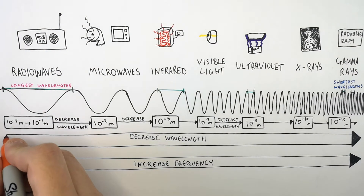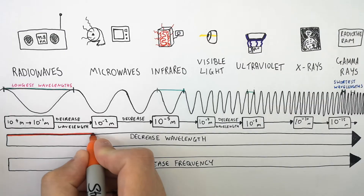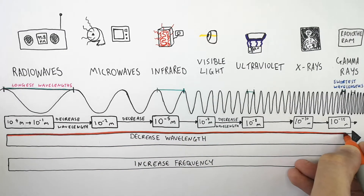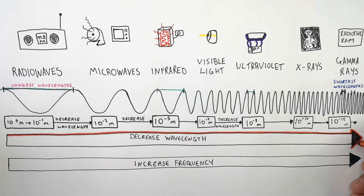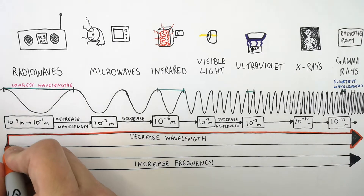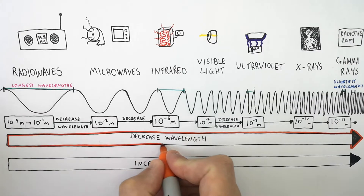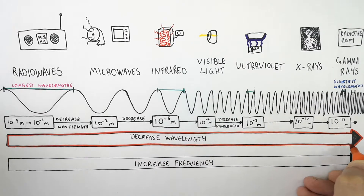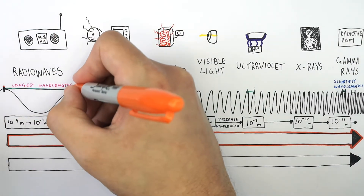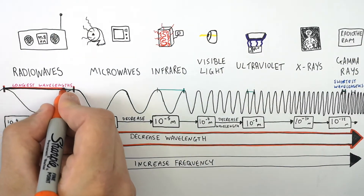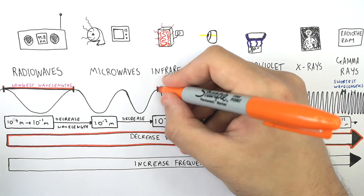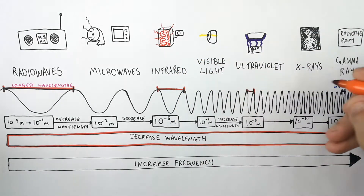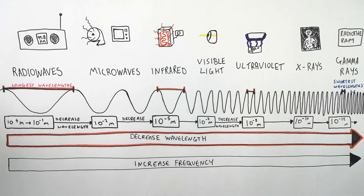So a quick recap. You're going to find the longest wavelengths in the radio wave section, and they decrease in wavelength as you move down the electromagnetic spectrum through microwaves, infrared radiation, visible light, ultraviolet light, x-rays, and gamma rays. Radio waves have the longest wavelength; infrared waves have shorter wavelengths still; ultraviolet light has shorter wavelengths; and gamma rays have the shortest wavelengths.